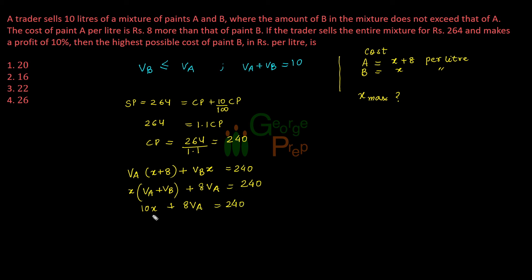From here I have to find out the maximum value of X. So 10X equals 240 minus 8VA. If X has to be maximized, VA should be minimized because that gets subtracted from 240. The minimum value of VA is 5 because VB could be at the max equal to VA.